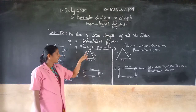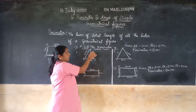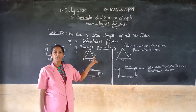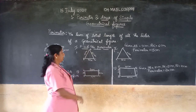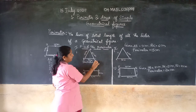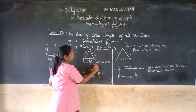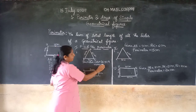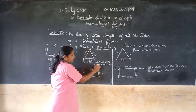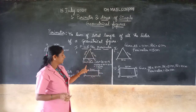Now here they have given a triangle. For a triangle, how many sides are there? There are 3 sides: AB, BC, CA. They have given the 3 sides with measurements. Perimeter is equal to AB plus BC plus CA. AB is 4 cm, BC is 7 cm, CA is 6 cm. Adding all 3 sides: 4 plus 7 is 11, 11 plus 6 is 17 cm. The perimeter of this triangle is 17 cm.